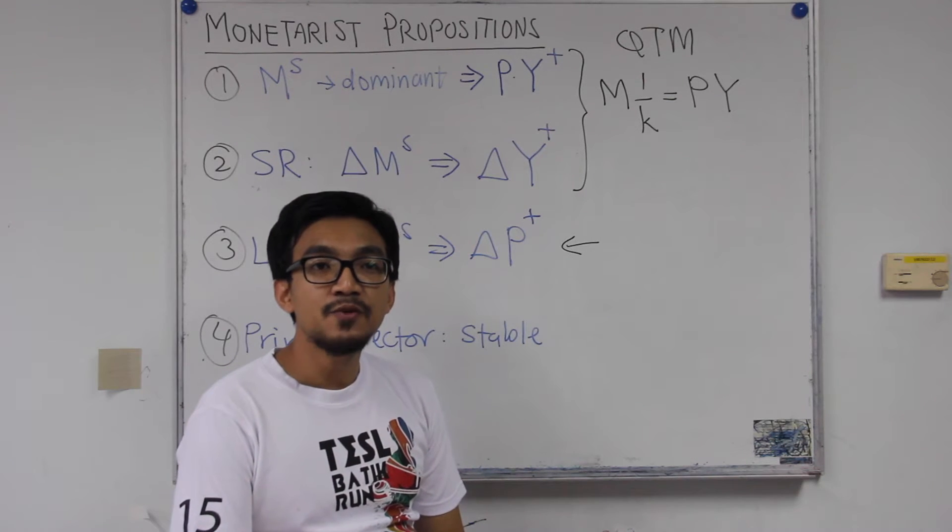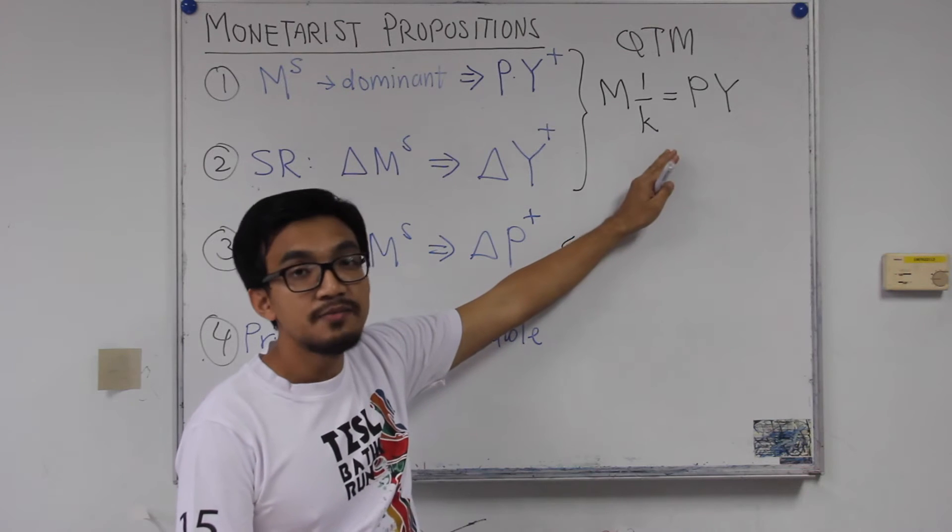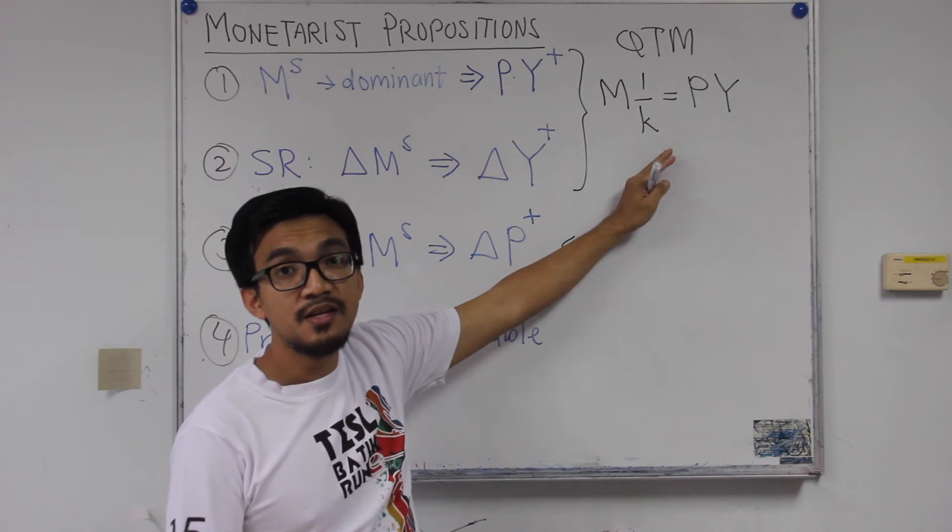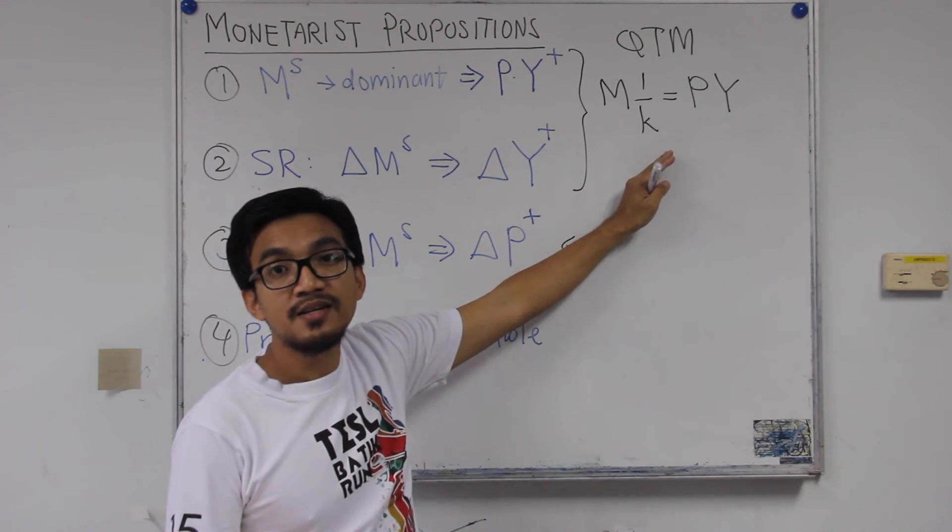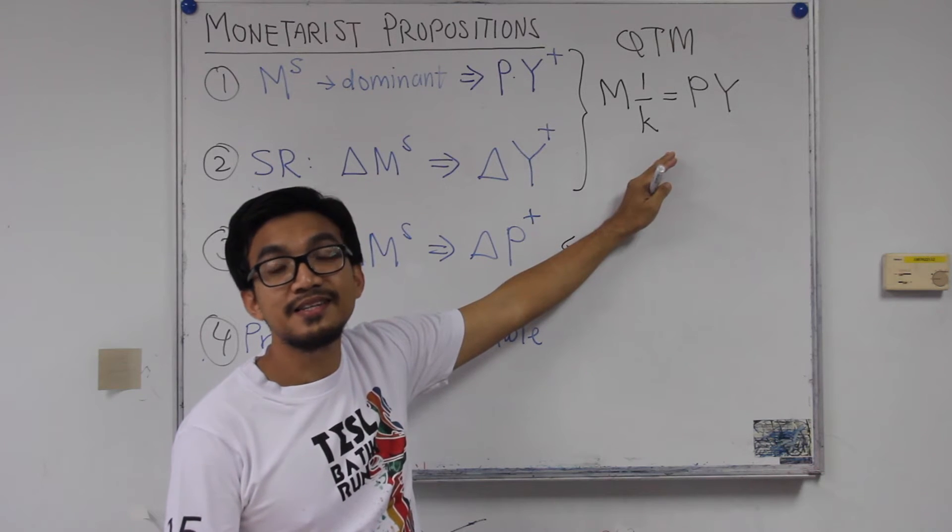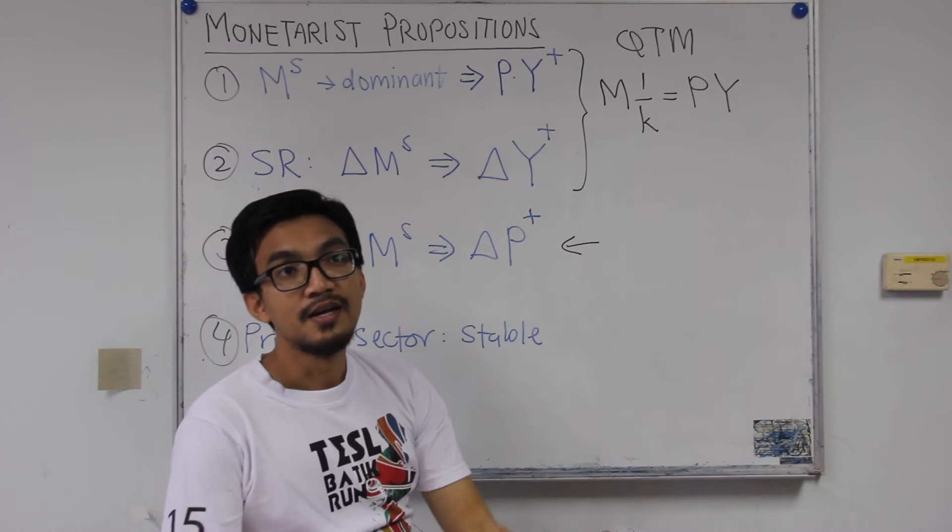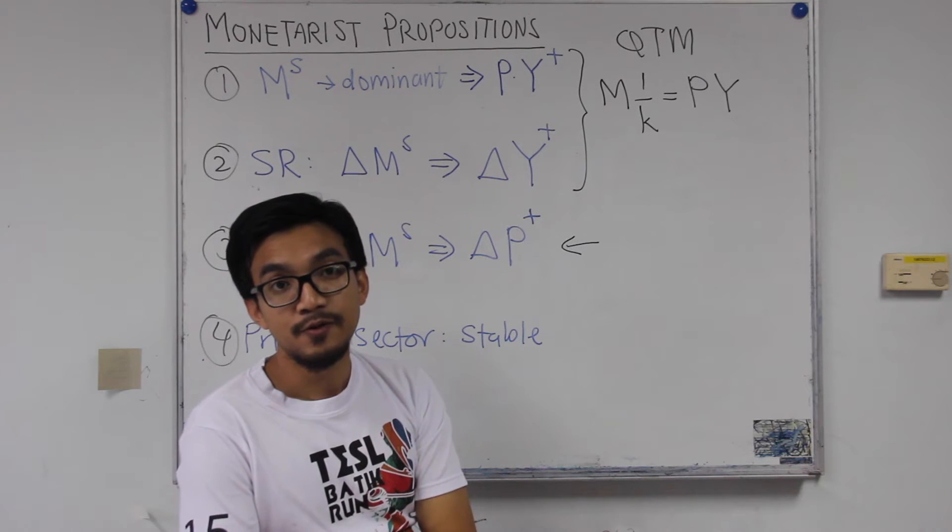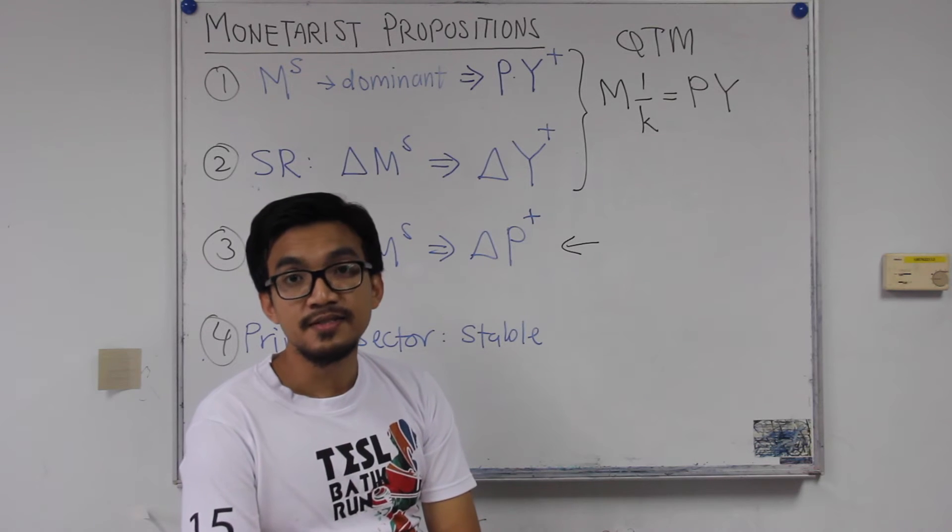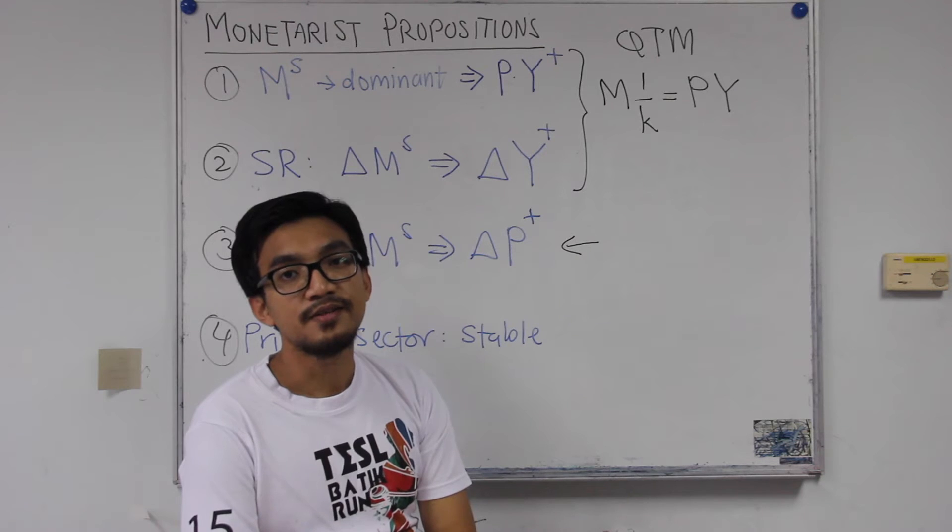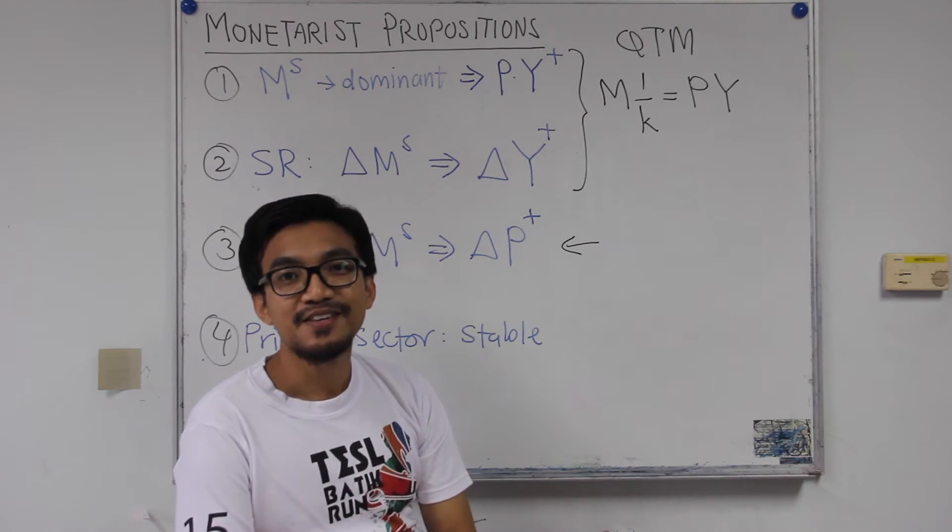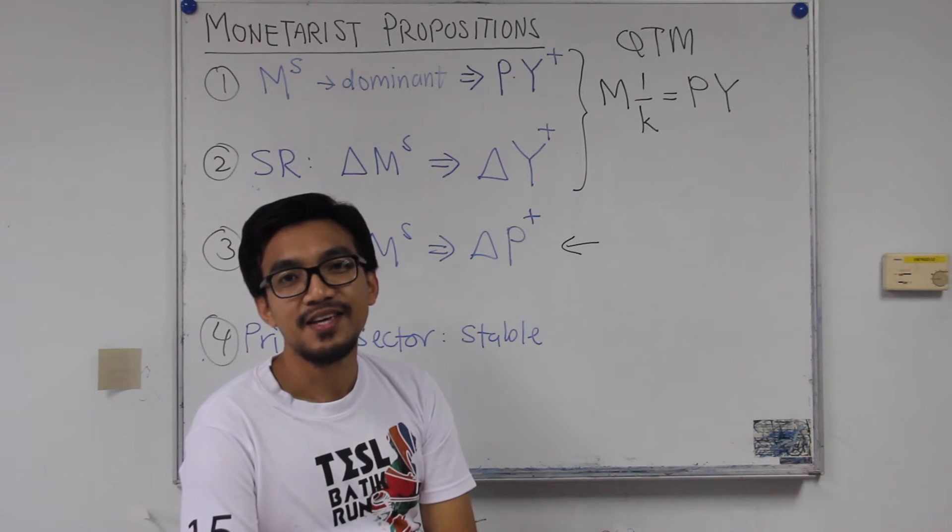However, Keynesian, they attack that view by saying that no, this is not stable because of the three motives of holding money. If you still remember, so motif number three causes this K to be variable, not constant because it will be negatively affected by interest rate. How the speculative demand for money is negatively influenced by a change in interest rate. And Keynesian believe that investors, they are very sensitive to changes in interest rate. So remember that should explain the slope of the LM curve.